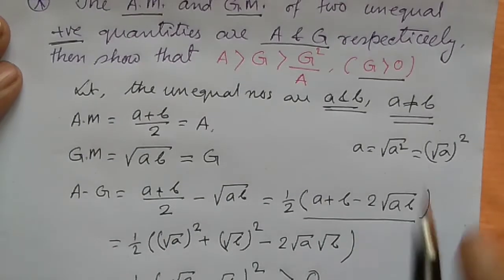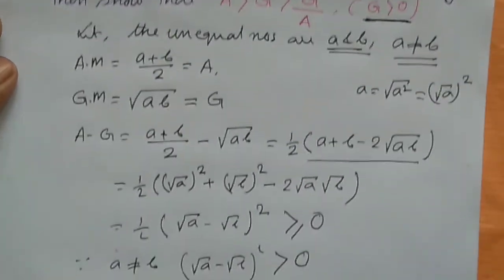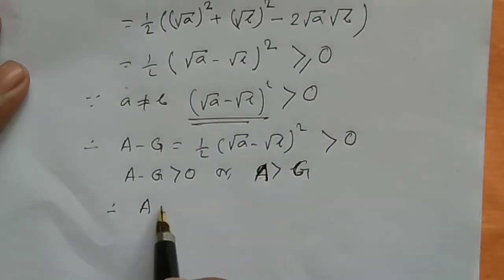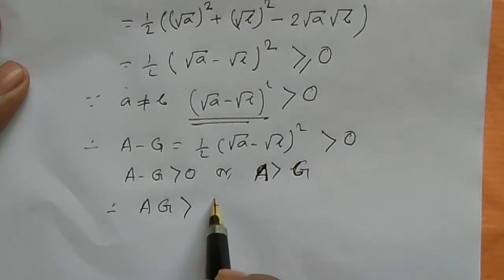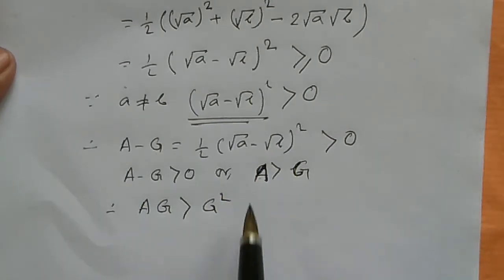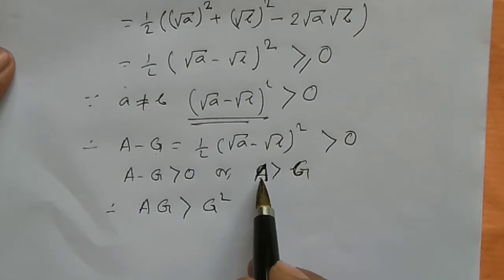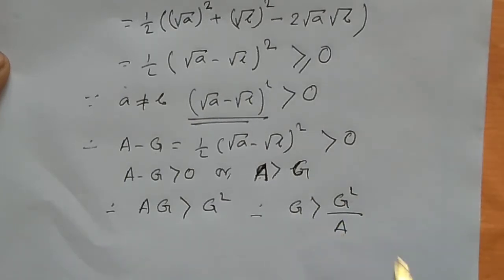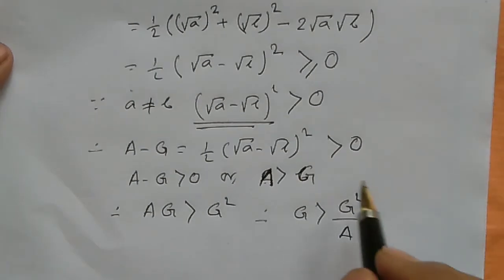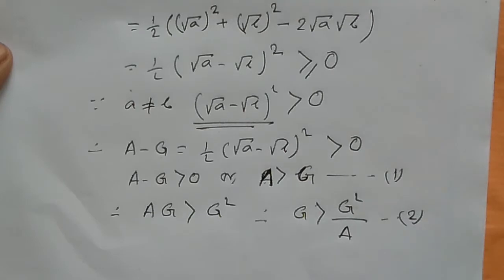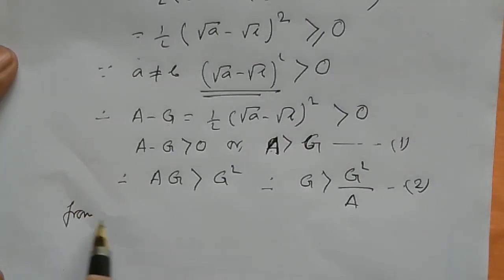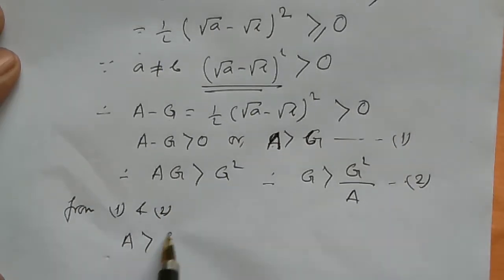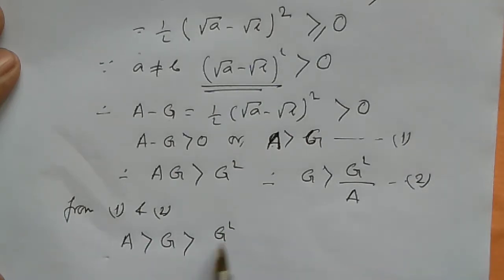Now since G is positive (G > 0), we multiply both sides of A > G by G: A·G > G². Dividing both sides by A (positive), we get G > G²/A. ... (2). From (1) and (2) we can write: A > G > G²/A.